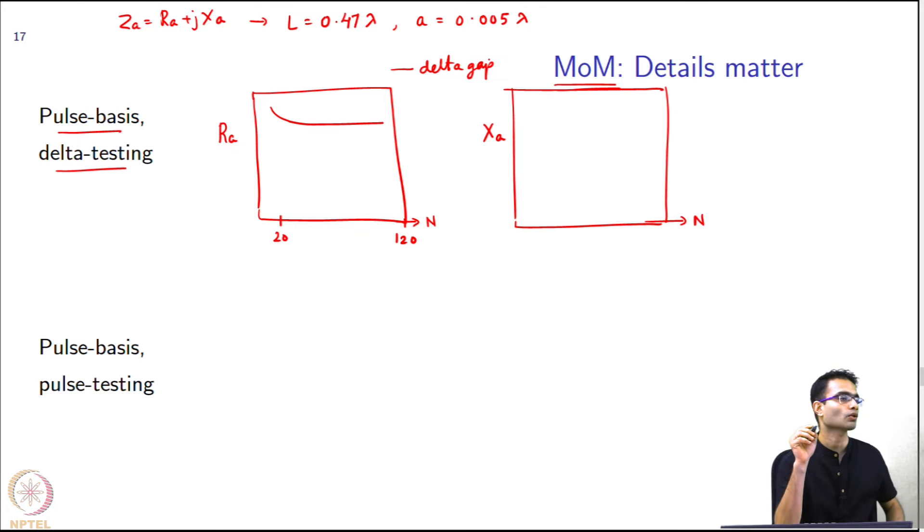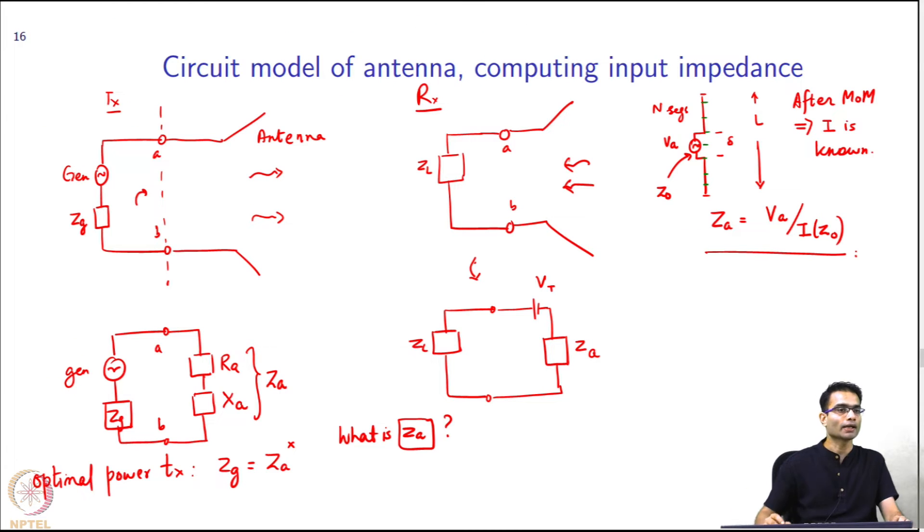You may ask how do I, if I use this procedure to find out the input impedance, I will get different answers depending on whether I choose the delta gap input source or a magnetic frill because the linear algebra, the matrix and the vector are different. You will get different answers. But the answer should not really depend too much on that.